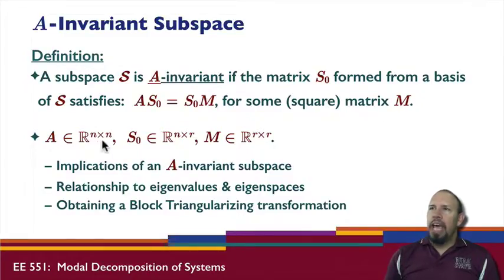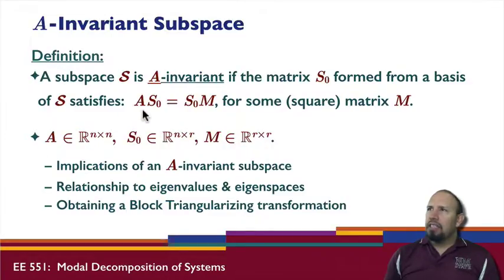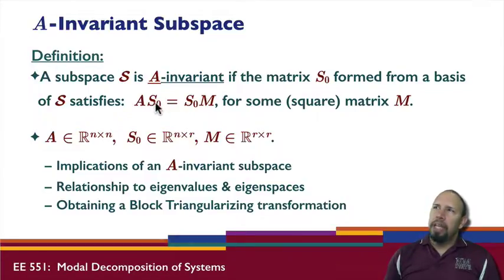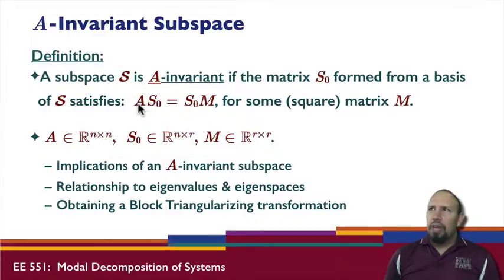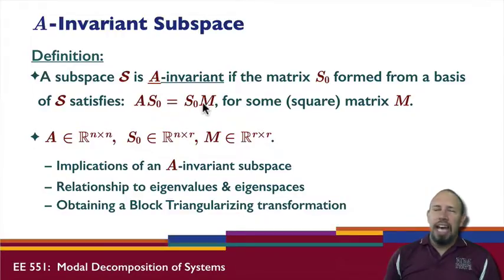Here we're assuming A is N by N, S₀ is N by R, and M is R by R. Those are the dimensions. If we were to replace S₀ with V, the eigenvector matrix, we have AV equal to V times something — the eigenvector relationship satisfies this kind of property, but there are other things that also satisfy it.